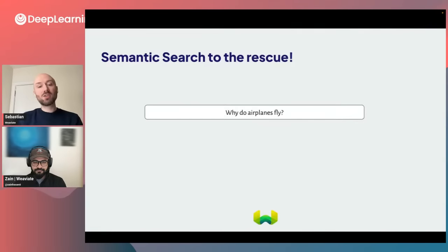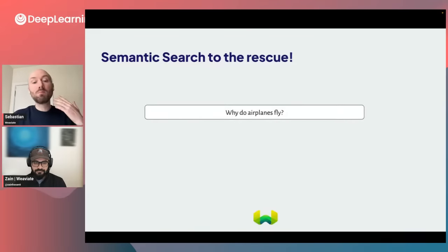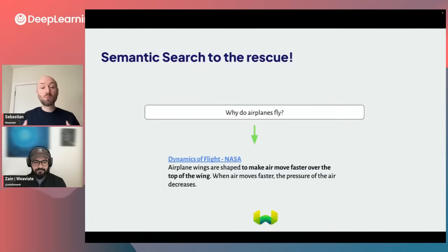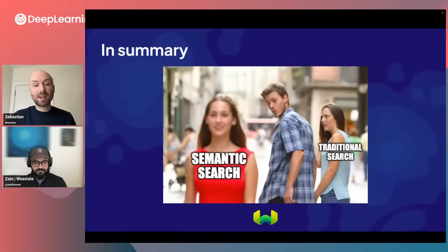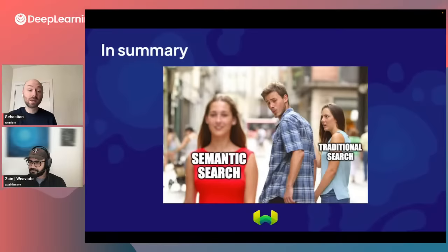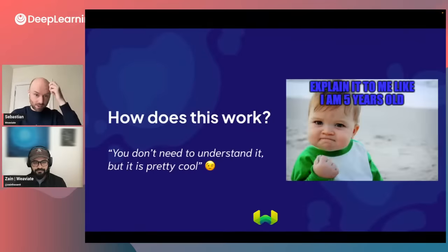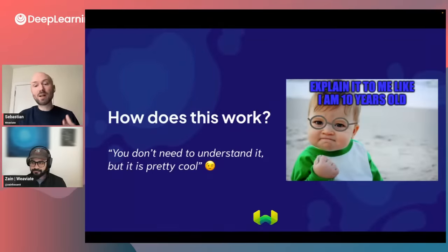Where semantic search comes to the rescue, it looks at the whole thing from a different perspective. It's not about matching the words in our content, but about matching the meaning — what is it that we mean by this question or what is it that we need? With semantic search, you're more likely to get a response that maybe comes from NASA that explains that to make air move faster over the top of the wing, so-and-so happens. This is more of an answer, and it's not about matching the keyword but what we're looking for.